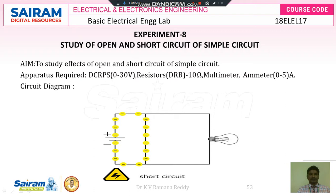To perform this experiment, let us look at the aim. The aim is to study the effects of open and short circuit of a simple circuit. The apparatus required includes one regulated power supply rated 0 to 30 volts, a resistance box, resistors of 10 ohms, a multimeter, and an ammeter rated 0 to 5 amperes.